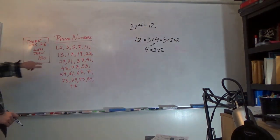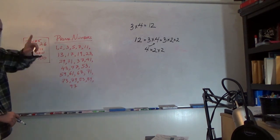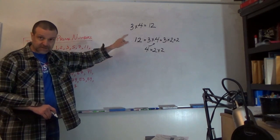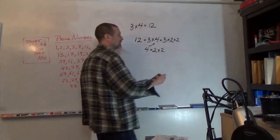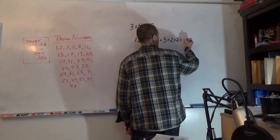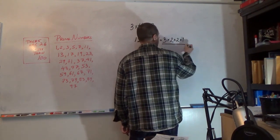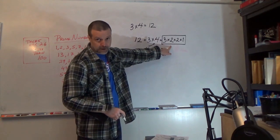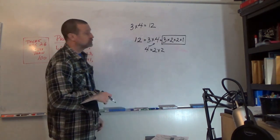And those are prime numbers, 3, 2, but we're missing 1. There's one more number that we can multiply that's a prime number, and that's 1. So this is the factorization of 12.